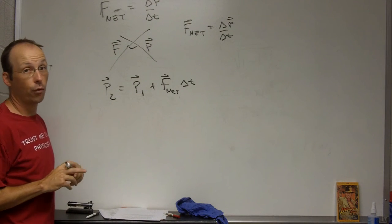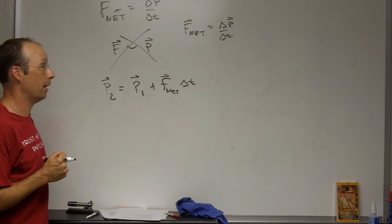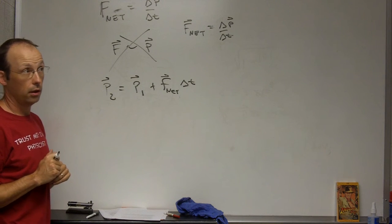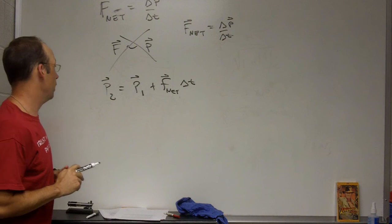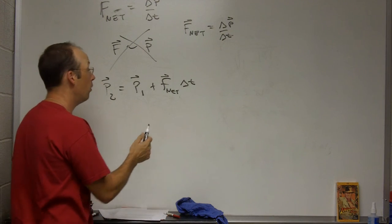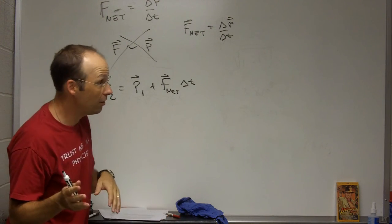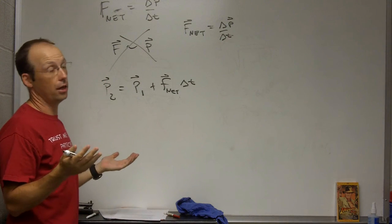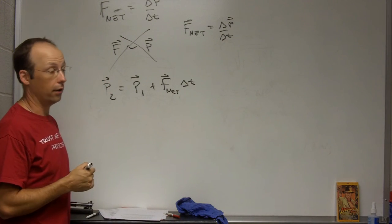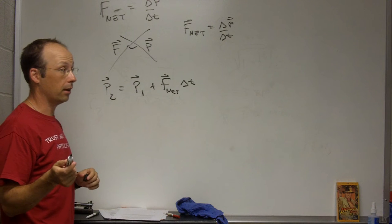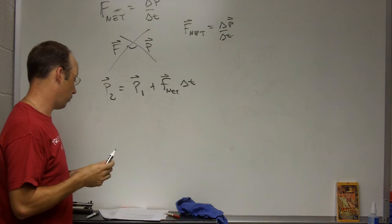This assumes the net force is constant. If the net force is not constant, this doesn't work. Unless you cheat. And the way to cheat is to say, if delta T is super small, then the F net, even if it is changing, is almost not changing. And you can get a very good value for this. And that's what I talked about in class. I talked about this with the numerical calculations.